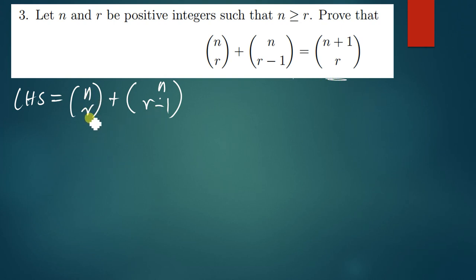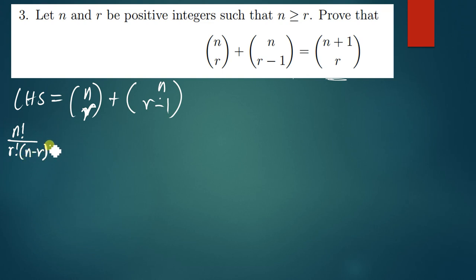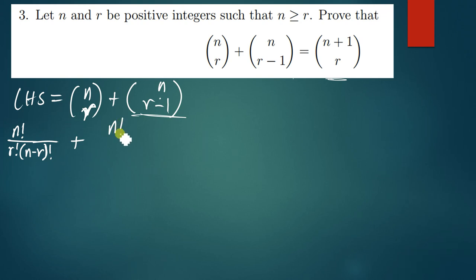So let's begin. This n choose r is written as n factorial over r factorial times n minus r factorial. Then plus, this n choose r minus one part can also be written using the same format: n factorial divided by r minus one factorial.